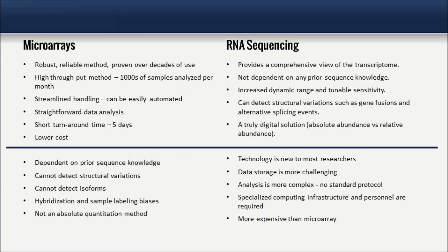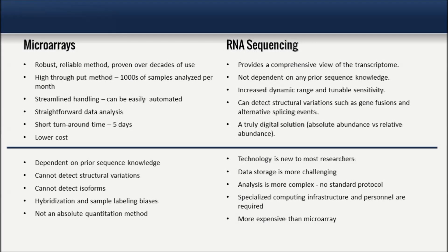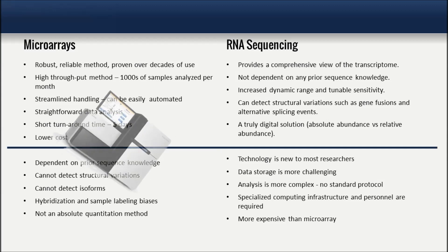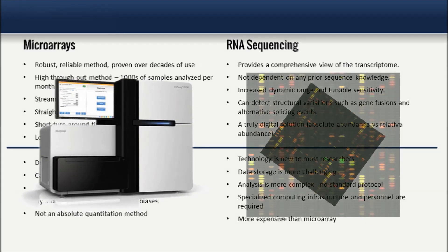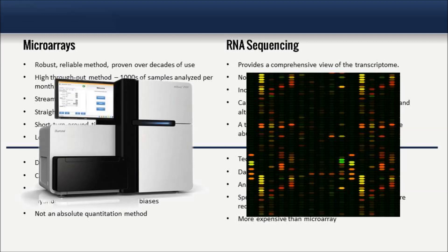In many instances, the best strategy may be a combination of technologies that maximizes the effectiveness of each while overcoming the limitations of the other. For example, RNA sequencing yields results that broadly cover all transcripts from samples of various temporal and spatial origins without the need for any prior sequence knowledge. However, due to the relatively higher cost and lower throughput nature of sample handling and data analysis,